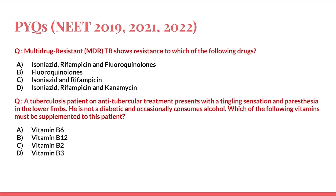Going back to the questions: the first question — 'MDR-TB shows resistance to which drugs?' — is a very straightforward question. The answer is isoniazid and rifampicin, as both must be present for the MDR-TB definition.